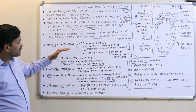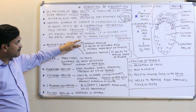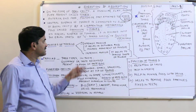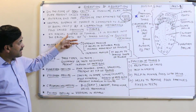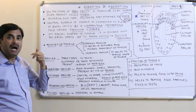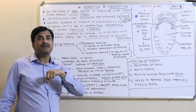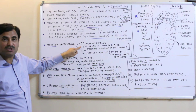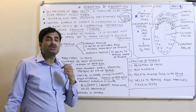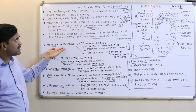The tongue consists of muscles. Two types of muscles are present: extrinsic and intrinsic. Extrinsic muscles help in the outward and inward movement of the tongue, while intrinsic muscles are helpful in changing the shape of the tongue. So we can say that the tongue is a muscular structure.